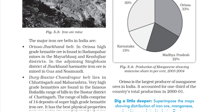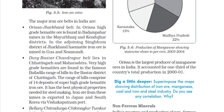The major iron ore belts in India are: first, the Orissa–Jharkhand belt. In Orissa, high-grade hematite ore is found in the Badampahar mines in Mayurbhanj and Keonjhar districts. In the adjoining Singhbhum district of Jharkhand, hematite iron ore is also found.